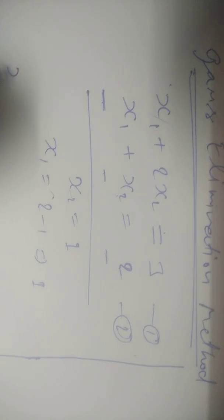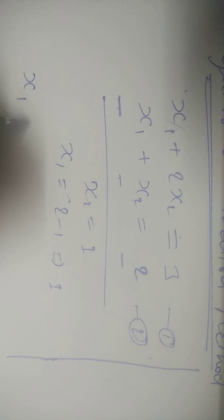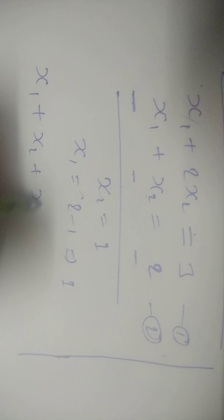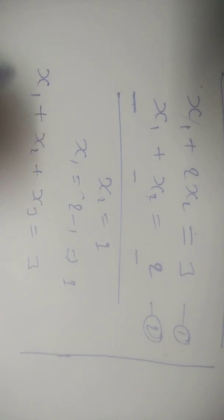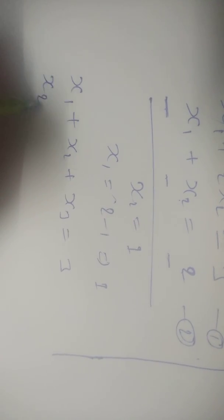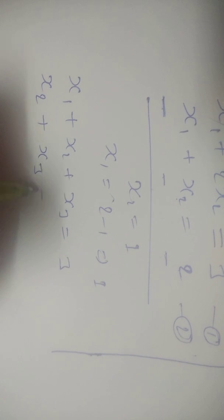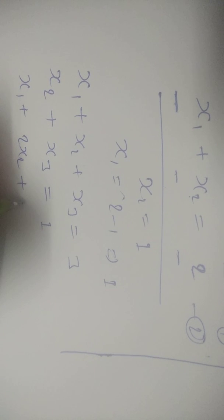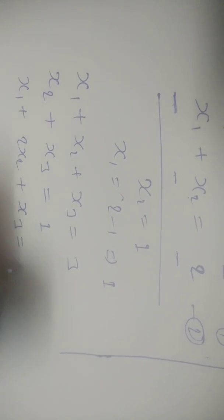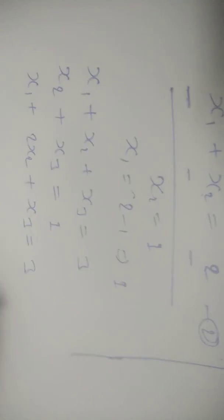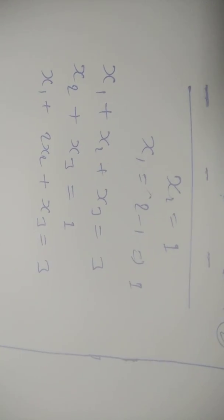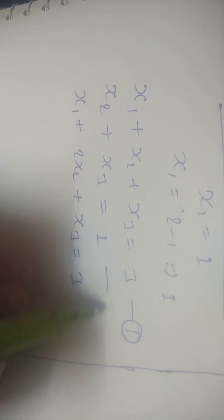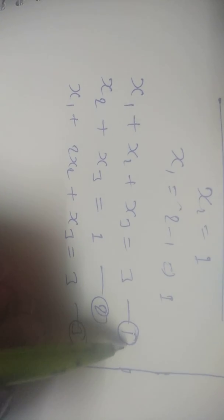Now if we have three variables, the equations are: x1 plus x2 plus x3 is equal to 3, x2 plus x3 is equal to 1, and x1 plus 2x2 plus x3 is equal to 3. How do we solve this? We can solve these equations from the first, second, and third equations.